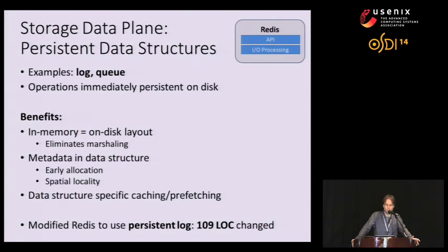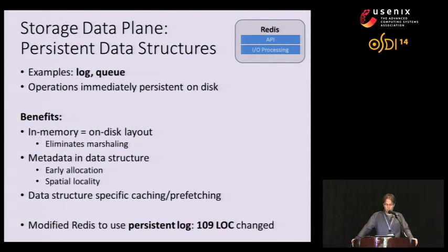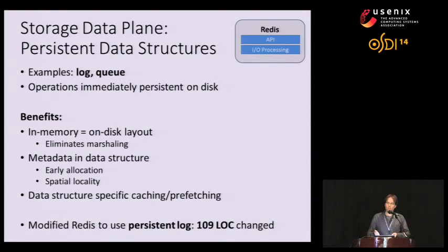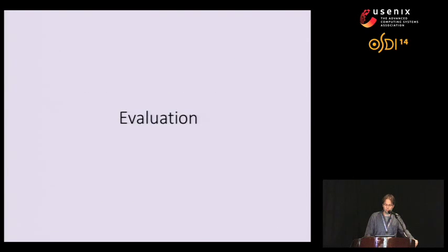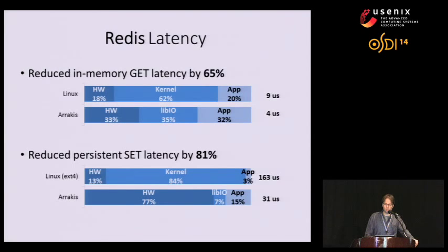On the read side, we can do data-structure-specific caching and prefetching using higher-level semantics. For example, knowing a log is accessed sequentially allows serial prefetching of entries. To measure performance, we modified Redis to use our persistent log implementation instead of its own — a fairly straightforward change involving 109 lines of code, essentially replacing Redis's log implementation with ours since the APIs were identical. As we'll see in the evaluation, this provides vast performance benefits in both latency and throughput.